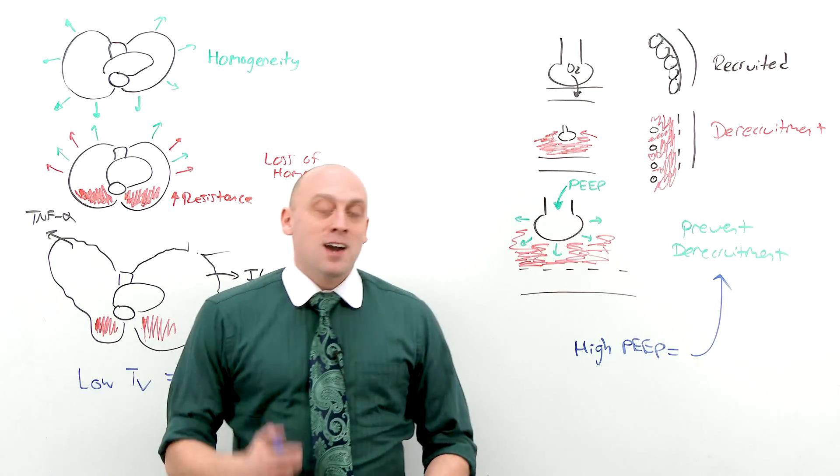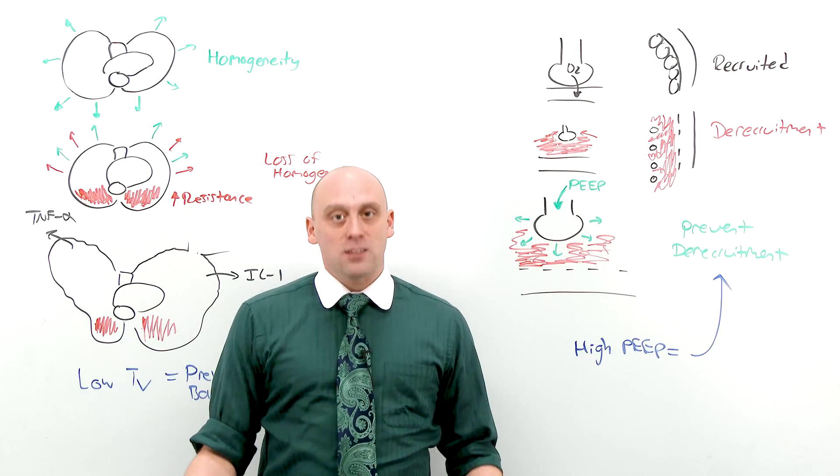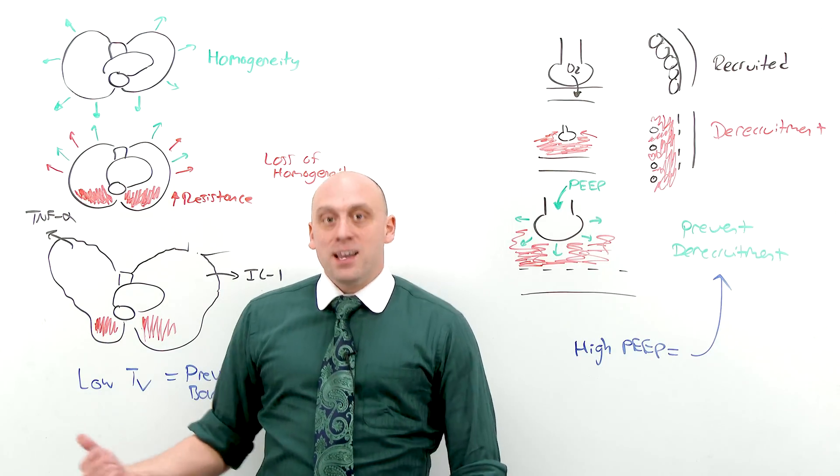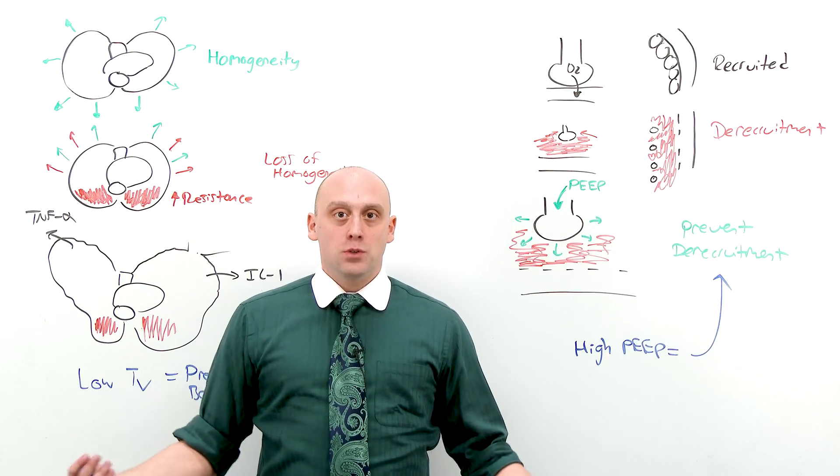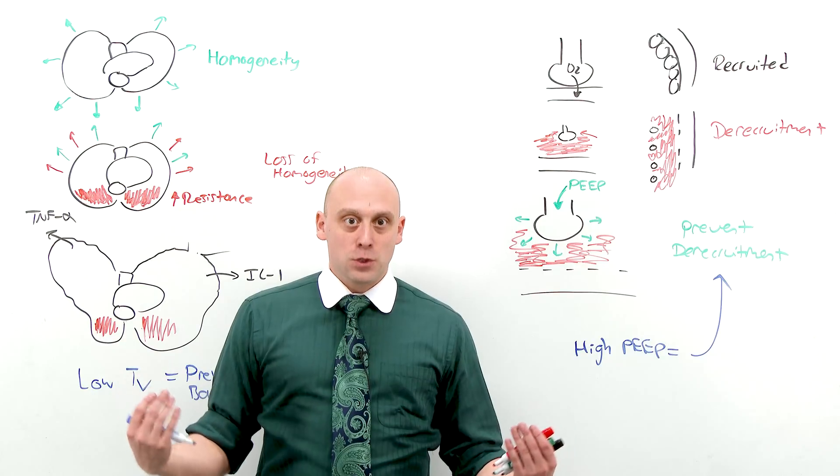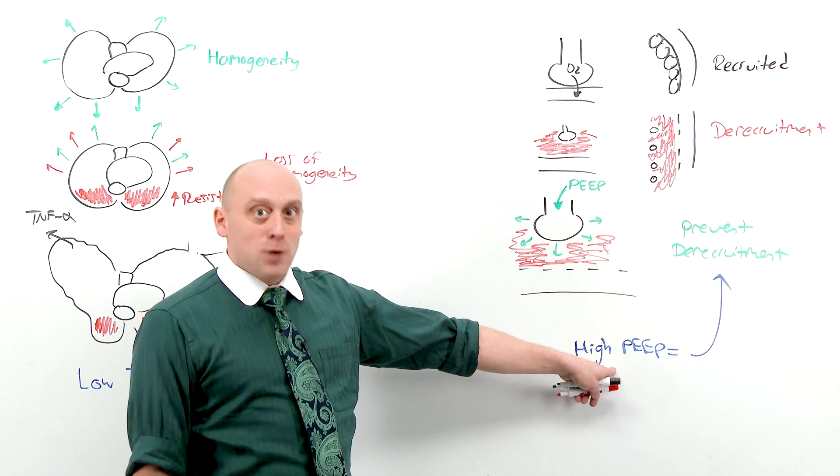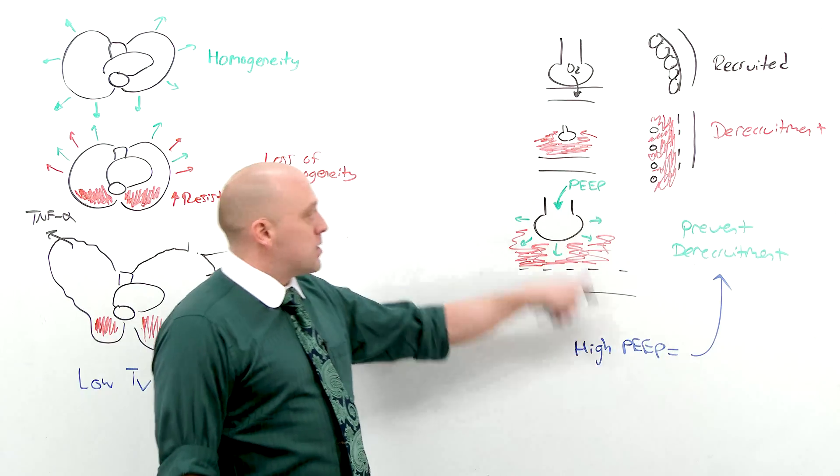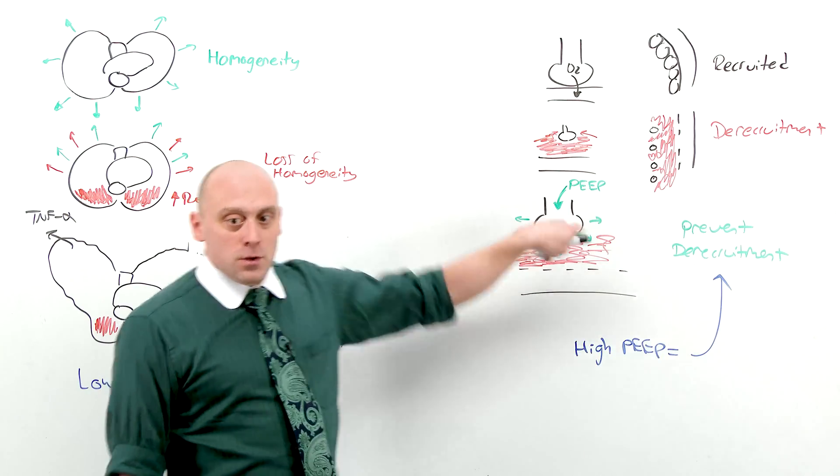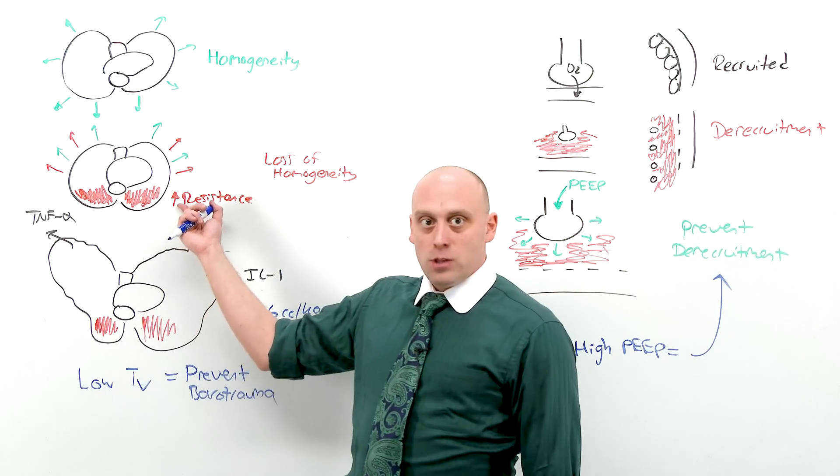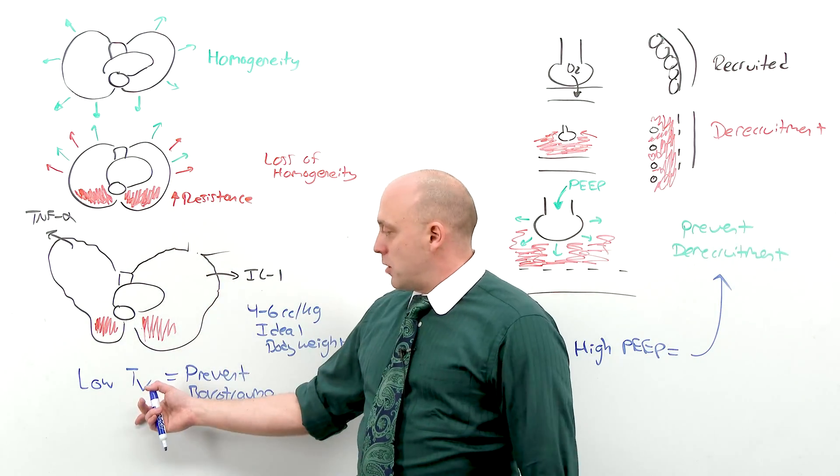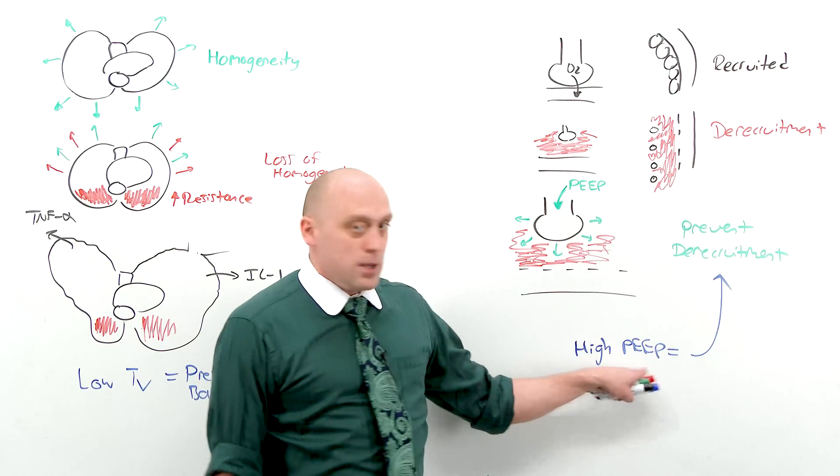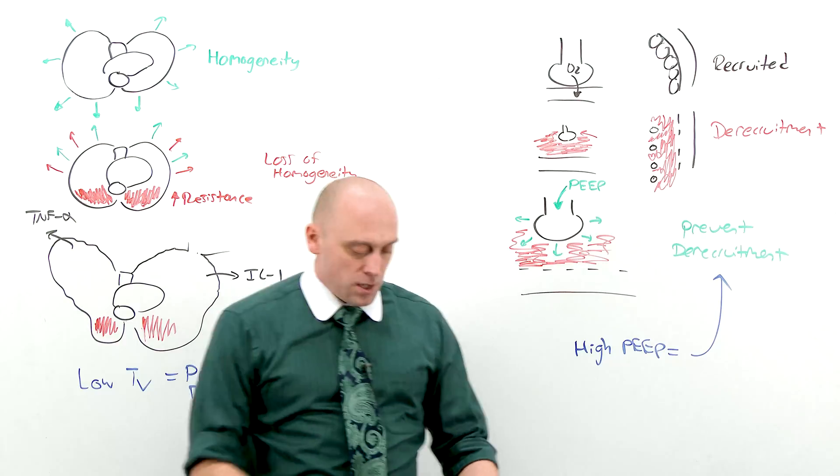We also know that giving a high FiO2 can be toxic to the lungs. And as we learned in the oxygenation lesson, PEEP and oxygen are both things you can do to increase the PaO2. So if you've already got high PEEP, great. Now you won't need to use so much oxygen. And that PEEP is preventing alveolar derecruitment. Which will mean that less lung will end up like this. And you're using low tidal volumes anyway. So we know very well, low tidal volume, high PEEP. That's the strategy we use all the time.